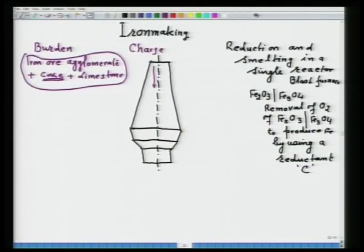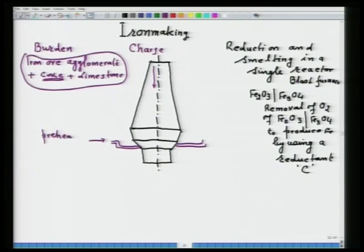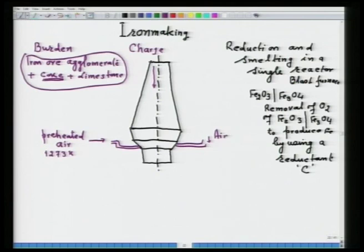The burden descends, and hot blast air is injected through the tuyeres at a specific location. This is preheated air, preheated to as high as 1273 Kelvin or even higher depending upon the operation. This air is also called air blast. The furnace has different zones: the hearth at the bottom, then the belly, the Bosch, and the stack.